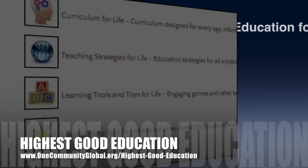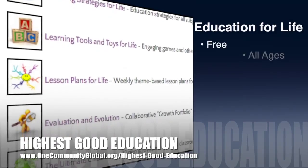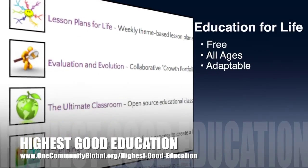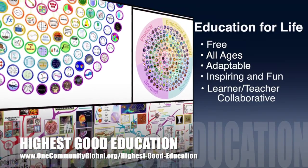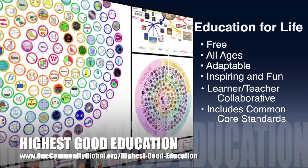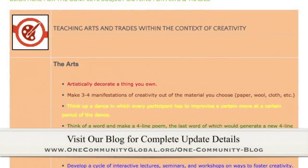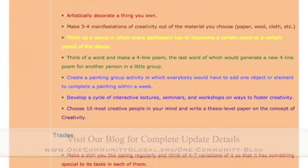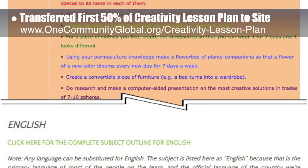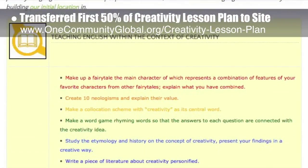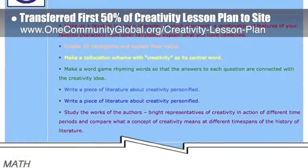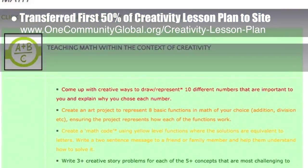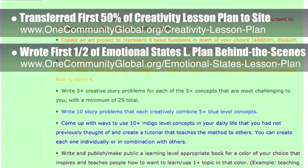One Community's approach to highest good education is open source and free shared, designed for all age groups, adaptable to any schooling environment, inspiring and fun for all participants, a learner-teacher collaborative, and includes U.S. Common Core Standards. This week the core team transferred the first 50% of the written content for the creativity lesson plan to the website. This lesson plan is purposed to teach all subjects to all learning levels in any learning environment using the central theme of creativity. Behind the scenes, we also wrote the first half of the emotional states lesson plan.